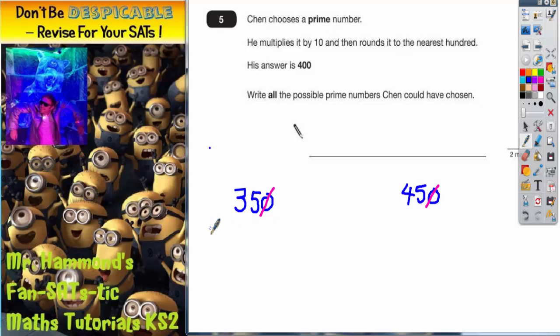So what we could do is just write out a list of numbers. 35, 36, 37, 38, 39, 40, 41, 42, 43, 44 and 45.